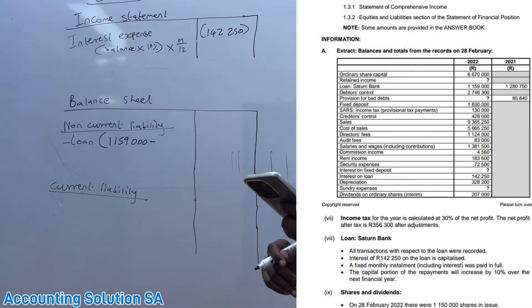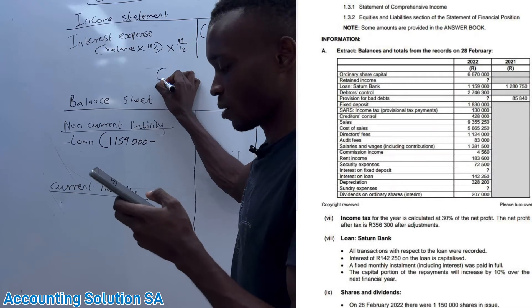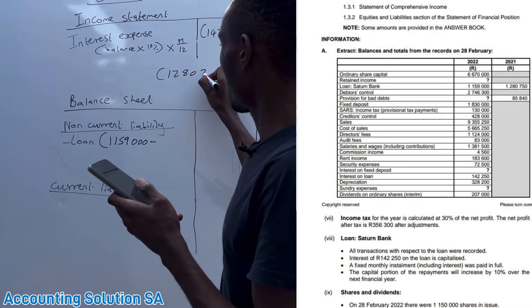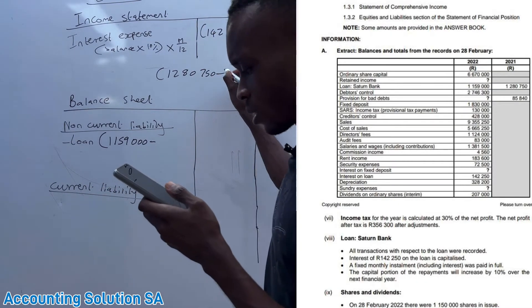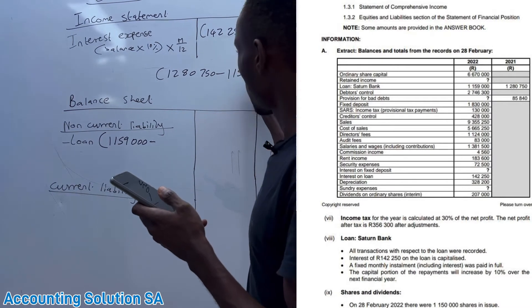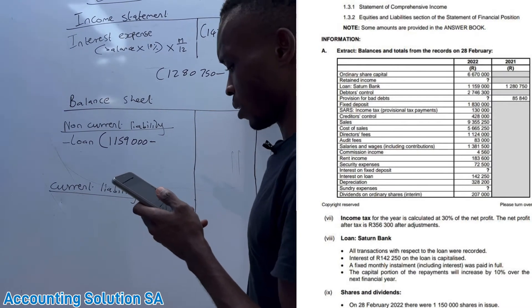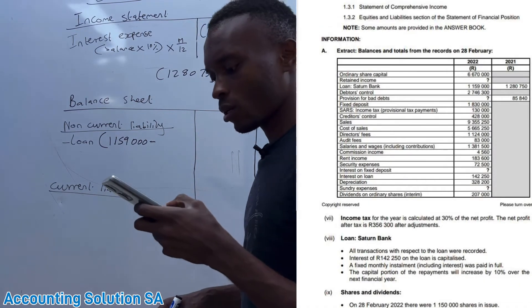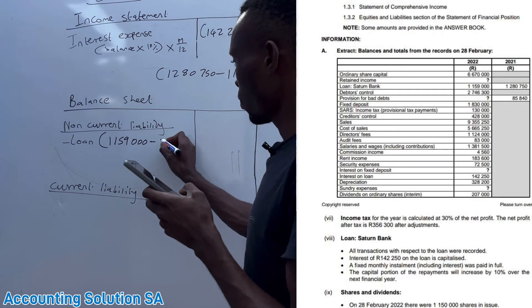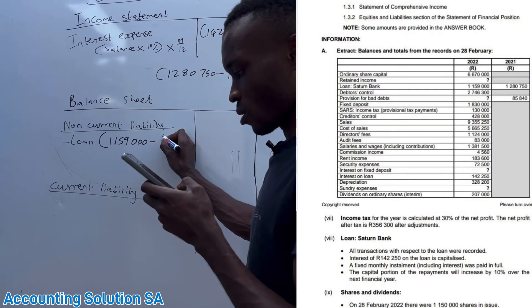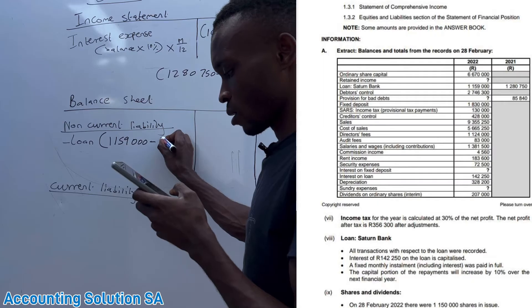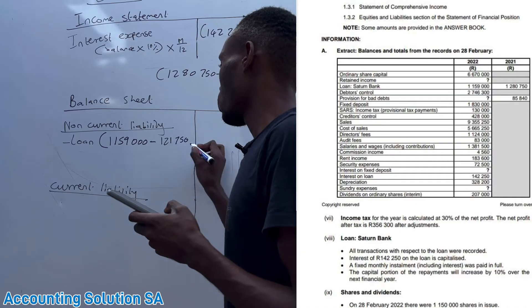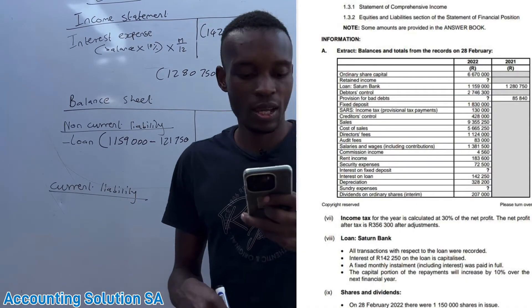Let's do this calculation: 1,280,750 minus 1,159,000. After that you will get an amount of 121,750.